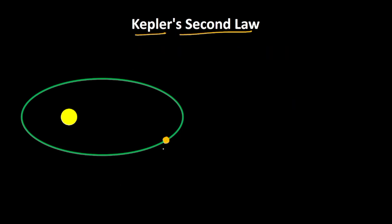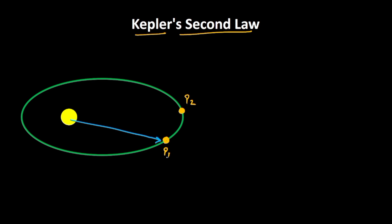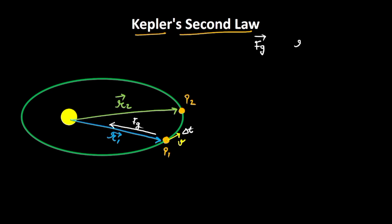Let's now prove the same mathematically. Let the planet be at position P1 and after time delta_t it moves to position P2. The position vector of the planet at P1 is R1 vector, and at P2 with respect to the sun is R2 vector. The instantaneous velocity at P1 is V, and the force of gravity Fg acts toward the sun. The angle between the position vector R1 and the force vector Fg is 180 degrees.